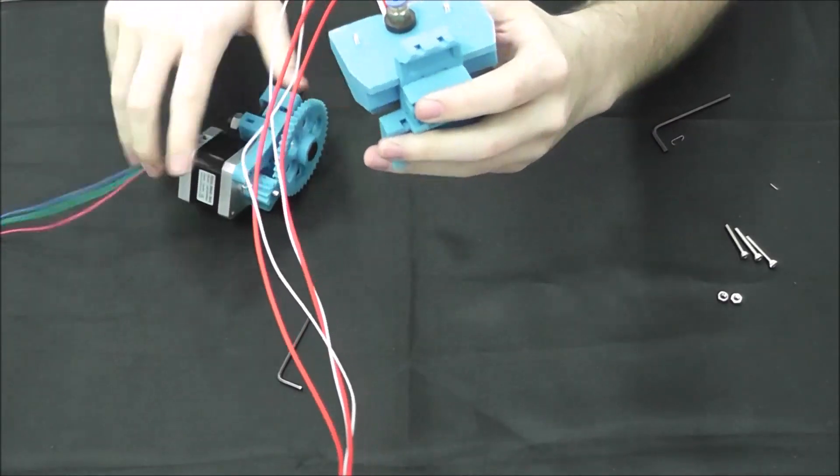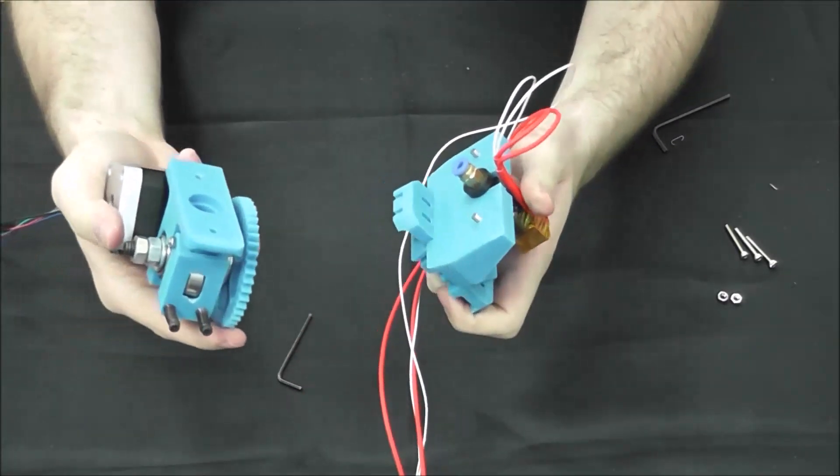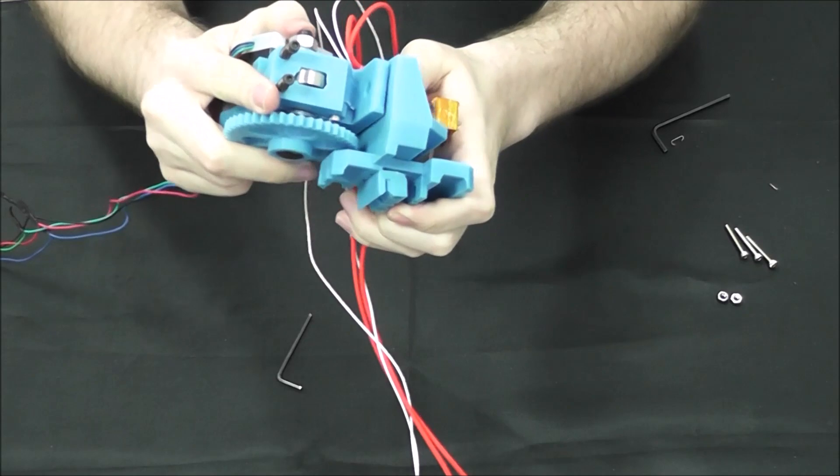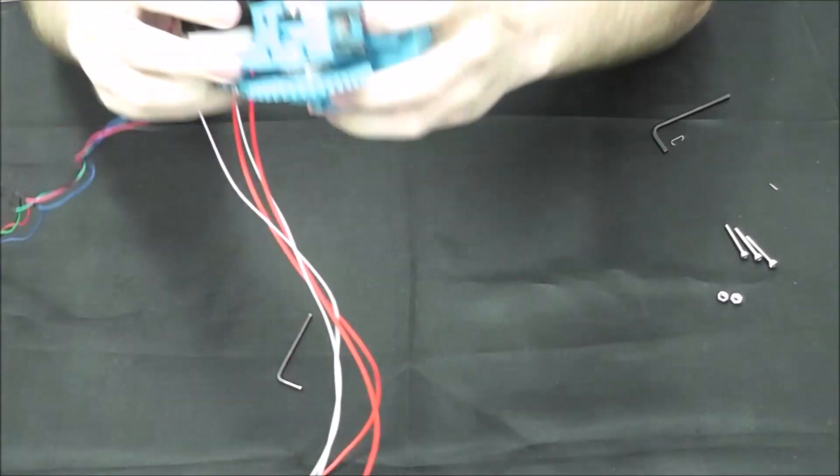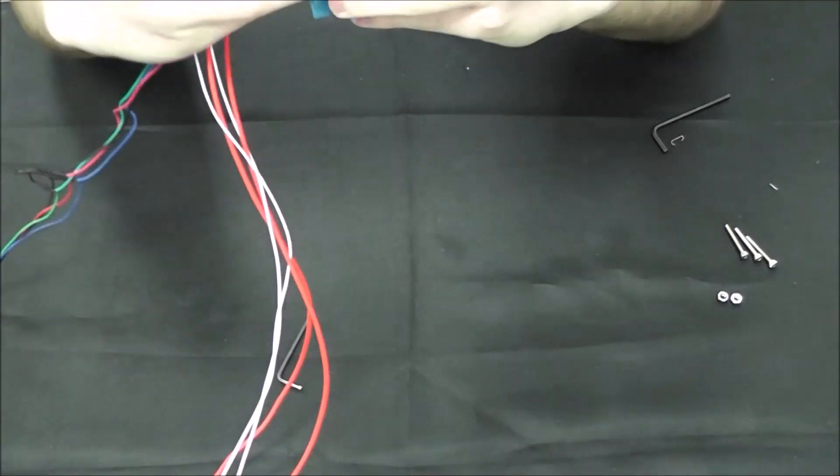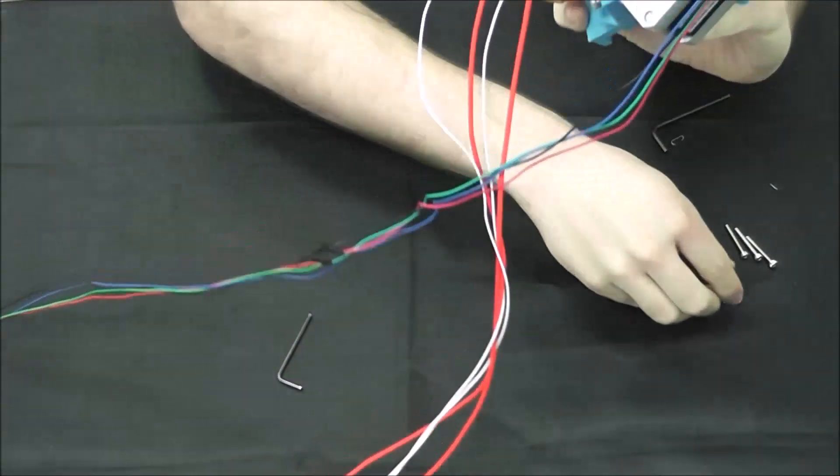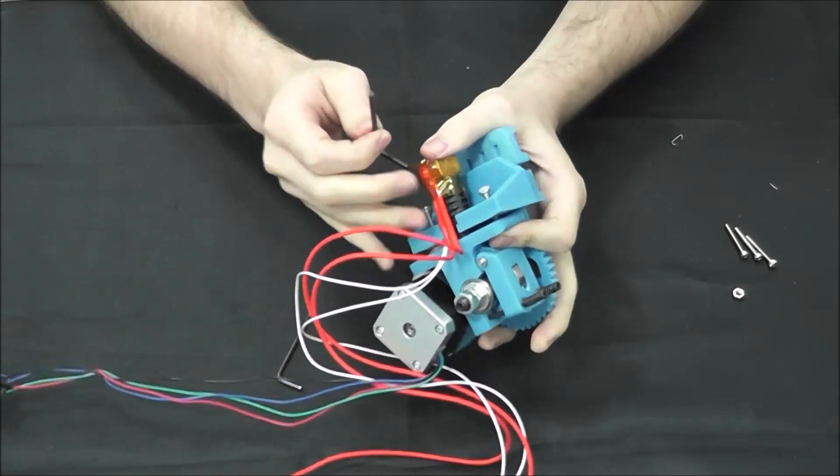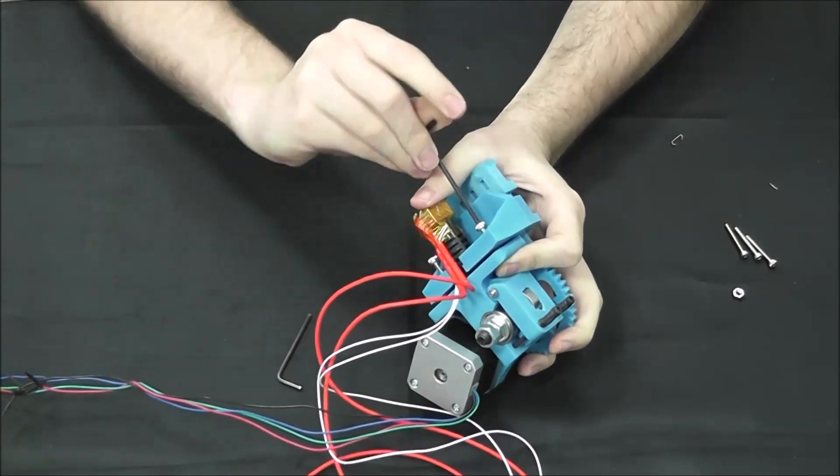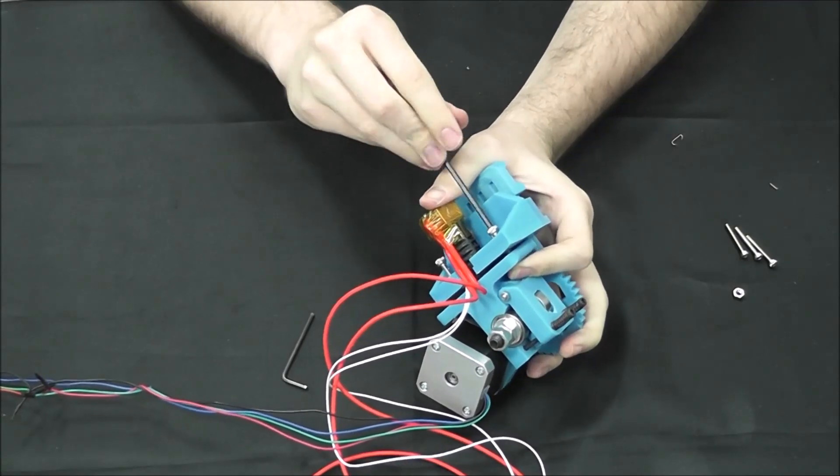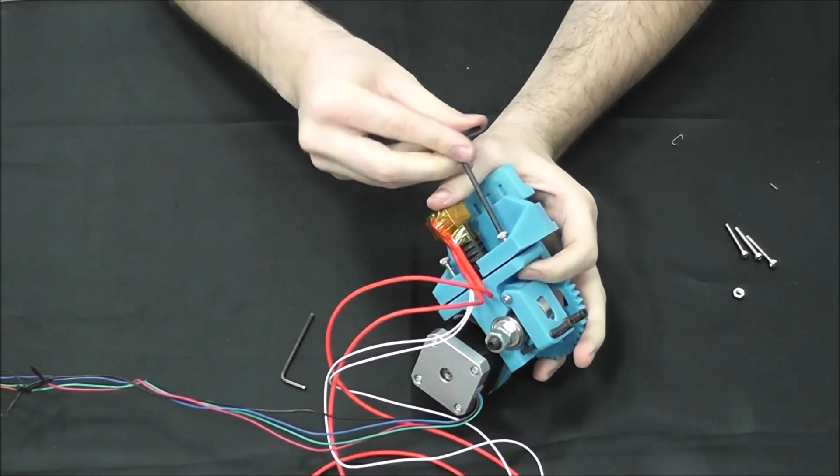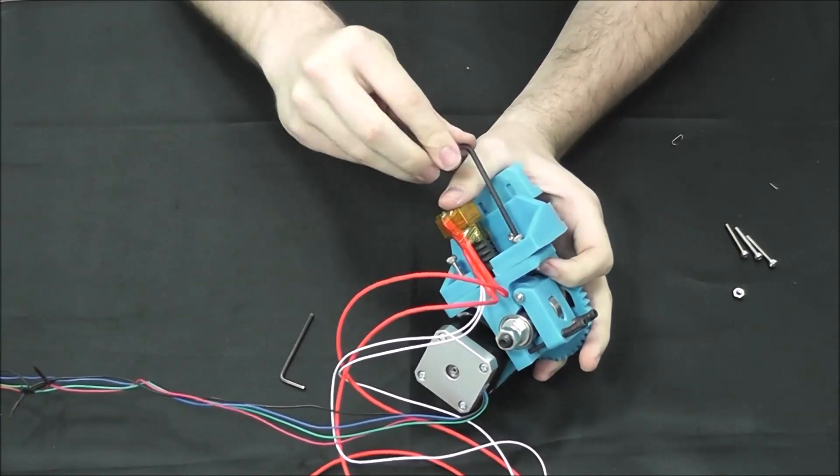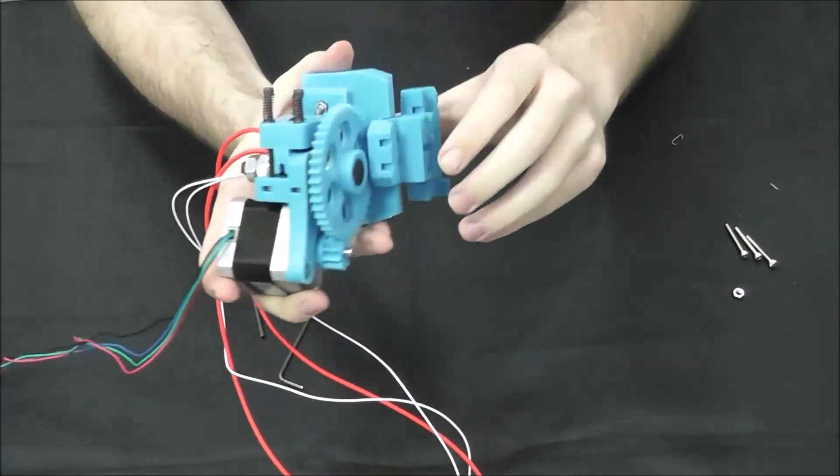Then, we will mount the extruder cold end on top of the adapter with the two M4 holes you see here. You want the motor of the extruder facing the right side. And then, you'll put the nuts in the spots provided and tighten the entire assembly together with an allen key. You have your extruder assembled, your hot end in place, and your X carriage adapter mounted.